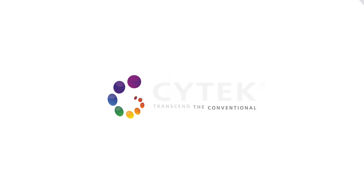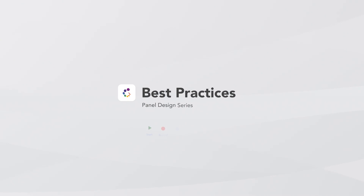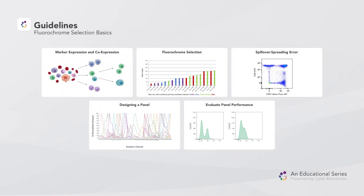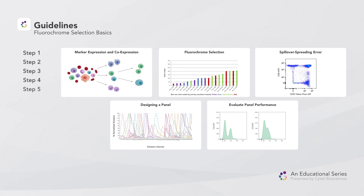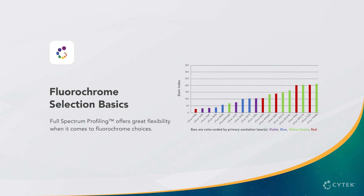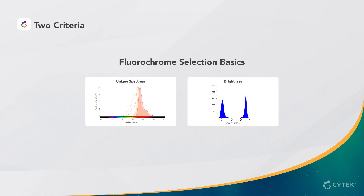Welcome to SciTech Biosciences' Full Spectrum Profiling Educational Series on Panel Design Best Practices. In this stepwise video series, we will walk you through the guidelines on successful panel design and assay optimization. In this video, we will talk about Step 2, Fluorochrome Selection. Full Spectrum Profiling offers great flexibility when it comes to fluorochrome choices, and we will review the basic criteria used to select fluorochromes for a multicolor panel.